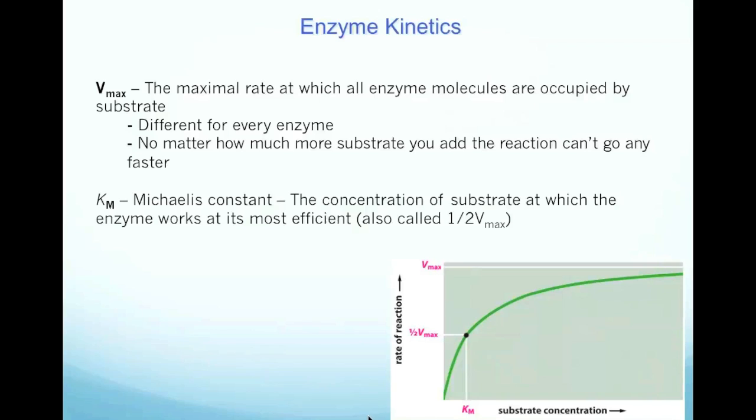And the other key term I want you guys to understand is the Michaelis constant. This is Km, and this is the concentration, so this is substrate concentration, at which the enzyme is working at one half Vmax. So the Michaelis constant isn't talking about the rate of an enzyme, but it's talking about the affinity the enzyme has for its substrate to be at a certain point, and this is the half Vmax.